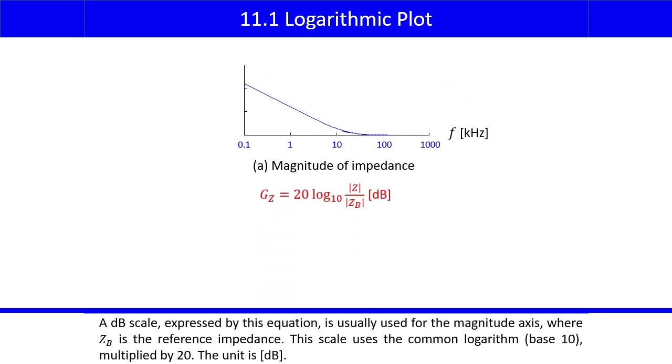A decibel scale, expressed by this equation, is usually used for the magnitude axis, where ZB is the reference impedance. This scale uses the common logarithm, base 10, multiplied by 20. The unit is decibel.